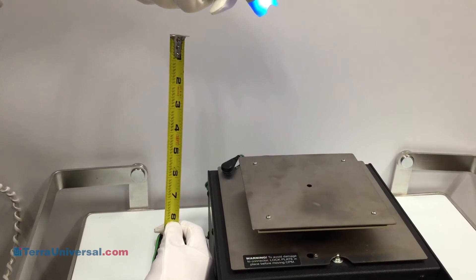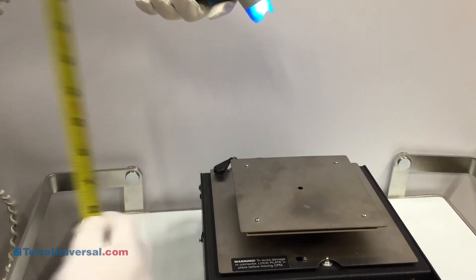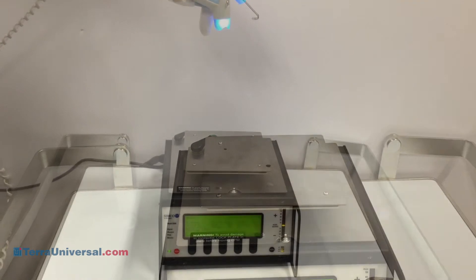The ionizing gun will be held approximately six inches away from a charged plate monitor, which is a reasonable distance for most workbench applications.